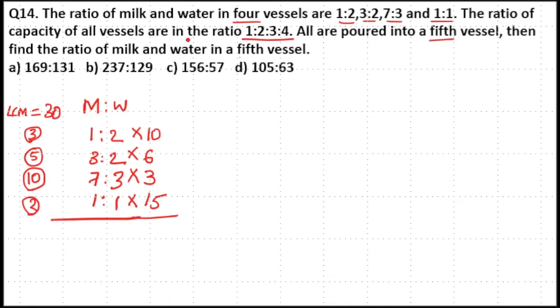Now you have capacity of all vessels in the ratio 1:2:3:4. So that means multiply by 1 here, 2 here, 3 here, and 4 here. Then if you calculate, you cannot cancel here. This is 3, this is 4. So all are even numbers, so just multiply this.